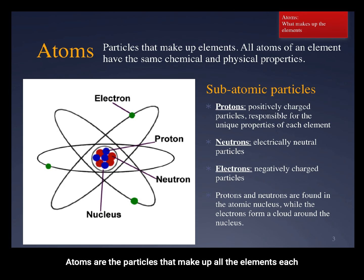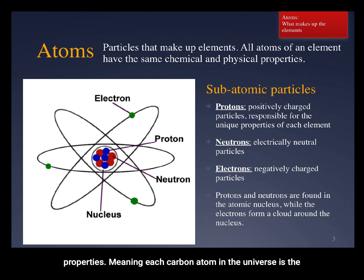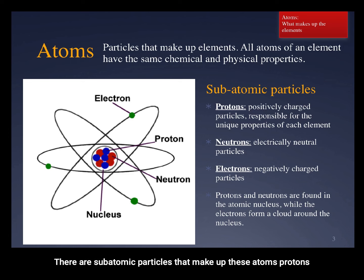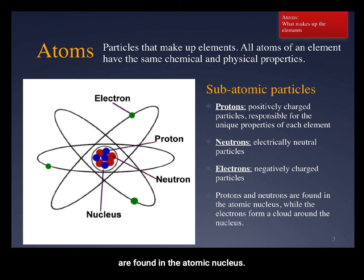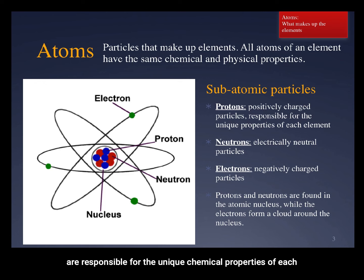Atoms are the particles that make up all the elements. Each atom of a given element has the same chemical and physical properties, meaning each carbon atom in the universe is the same as any other carbon atom in the universe. There are subatomic particles that make up these atoms: protons shown in blue, neutrons shown in red, and electrons shown in green. Protons are positively charged, neutrons are not charged, and electrons are negatively charged. Neutrons and protons are found in the atomic nucleus, whereas electrons form a cloud around the nucleus. Protons are responsible for the unique chemical properties of each element.